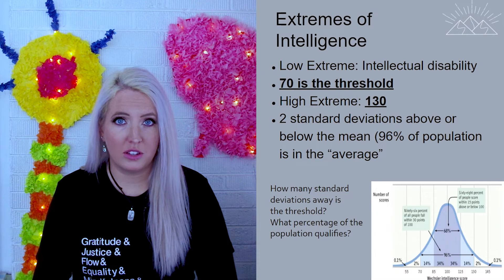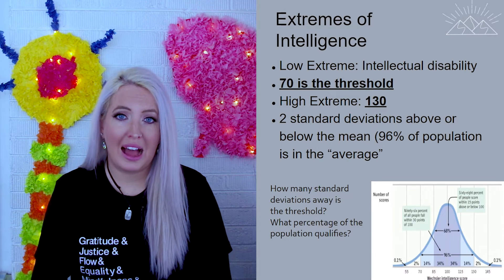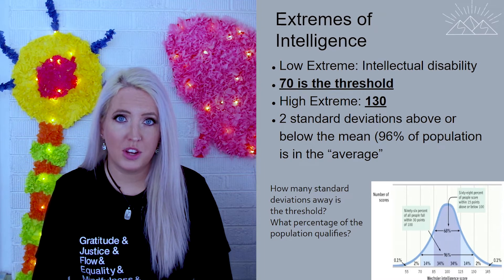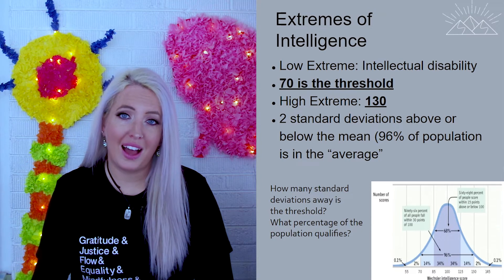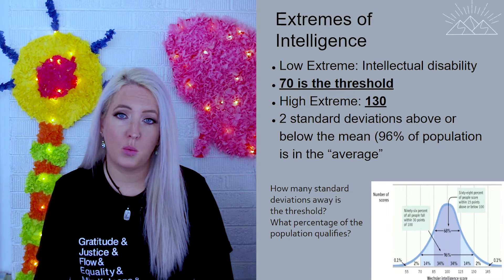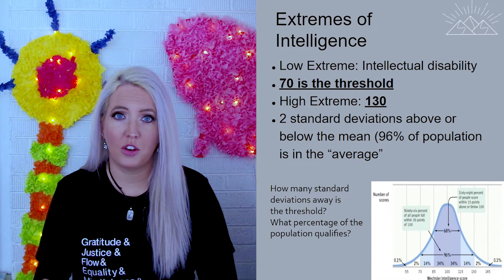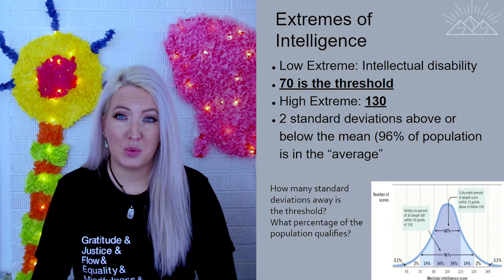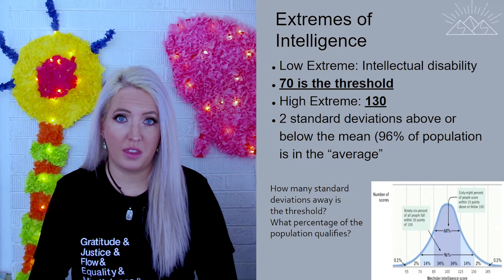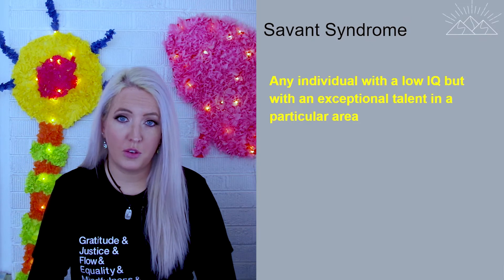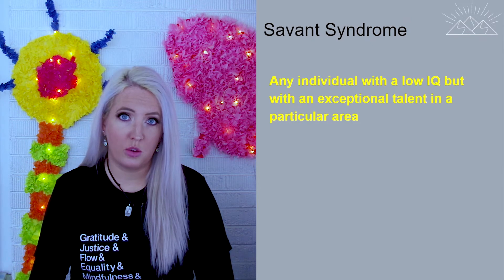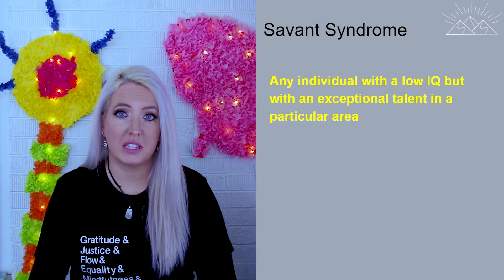When looking at the extremes of intelligence, there are both high and low thresholds. An IQ of 100 is average, 70 is the threshold for an intellectual disability, and 130 is the high extreme. Two standard deviations either above or below the mean is considered unique in some way, while anything between is considered average. Savant syndrome refers to an individual with a low IQ who also has an exceptional talent in one specific area.